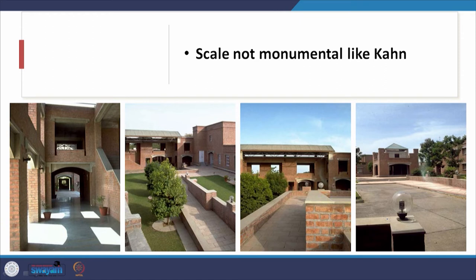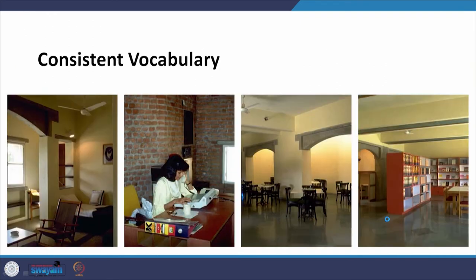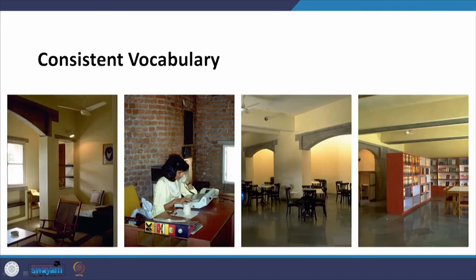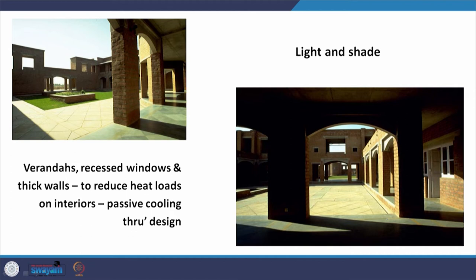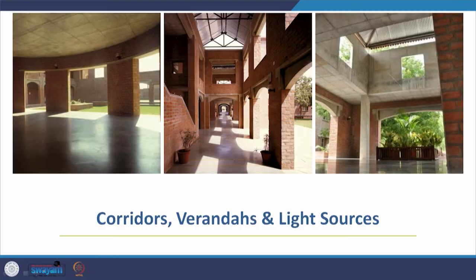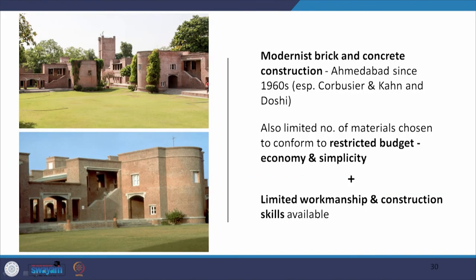The scale is not monumental like Kahn, but there is a consistent vocabulary whether on the outside or in the interiors. There is a play of light and shade — something in which Louis Kahn was a master. The verandas, recessed windows, and thick walls reduce heat loads in the interiors, and the building is passively cooled through design. You find these spaces cutting down glare. Corridors, verandas, and light sources — this shows light coming in from the top and this kind of brick and concrete construction, seen in 1960s Ahmedabad in the works of Corbusier, Kahn, Doshi, and onwards in many other architects.